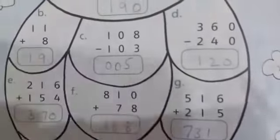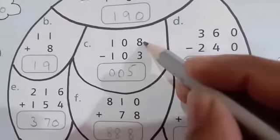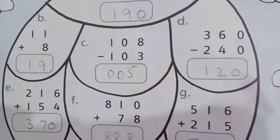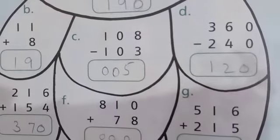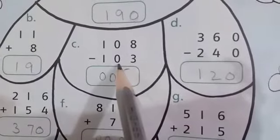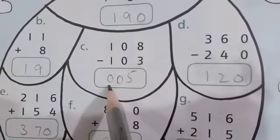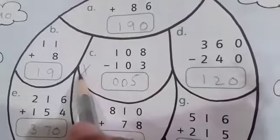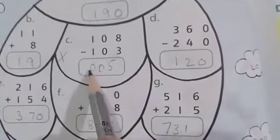Then a subtraction question. Eight is your given number, draw eight lines. Subtract three, so draw eight lines, then cut three lines. When you cut three lines, the answer is five. Zero minus zero is zero. One minus one gives nothing, so zero. Our answer is 005.